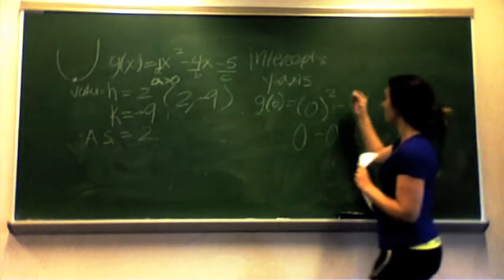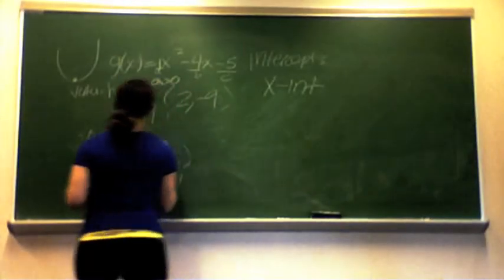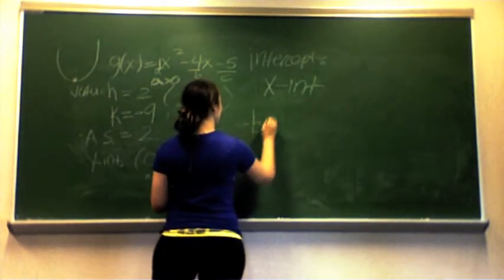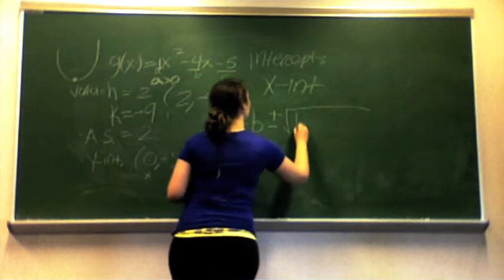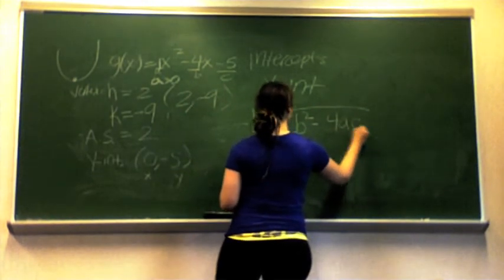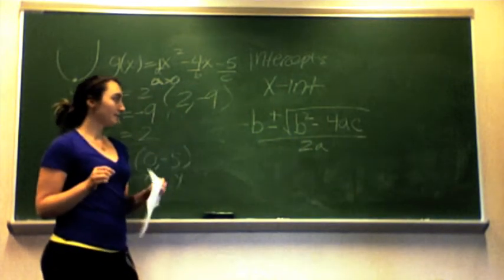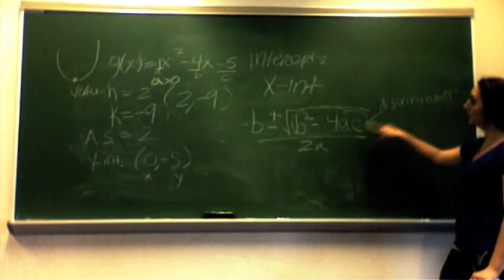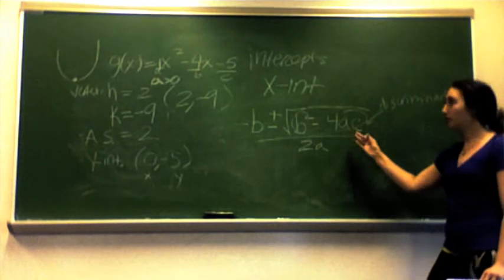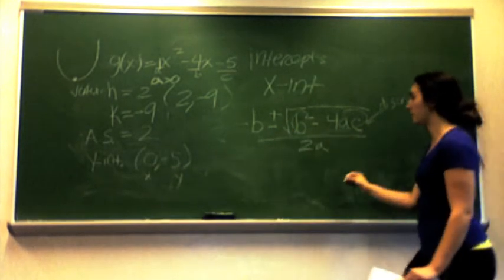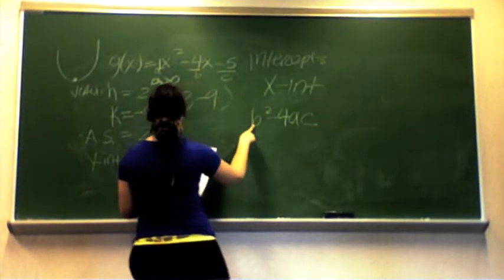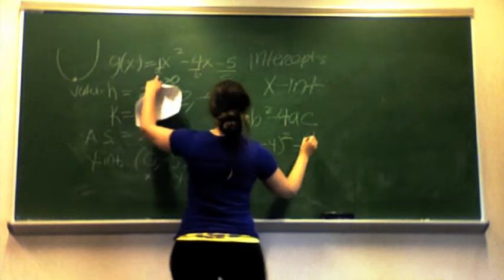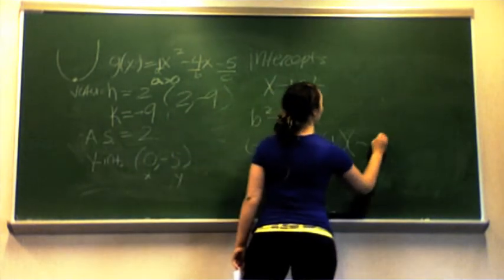We're going to plot that as the point (0, −5). Now we can't factor this equation easily because of the negative 4, so we'll use the quadratic formula: negative b plus or minus square root of b² − 4ac, all over 2a. The section under the square root is called our discriminant. It's easier to break this apart so we don't get confused. We start with the discriminant: b² − 4ac, where b is −4, a is 1, and c is −5.